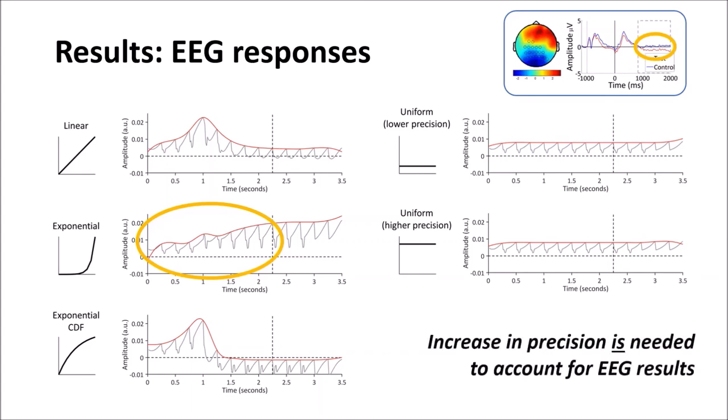So these results demonstrate that a temporal increase in precision is needed to account for the ramping of EEG activity that occurs during the preparatory interval, unlike the reaction time data.